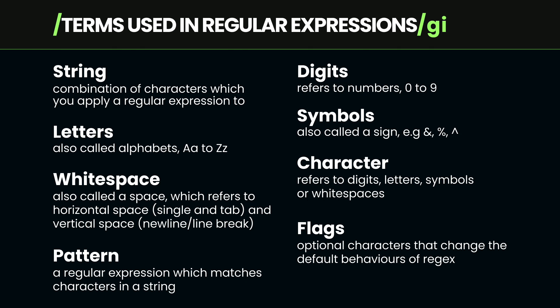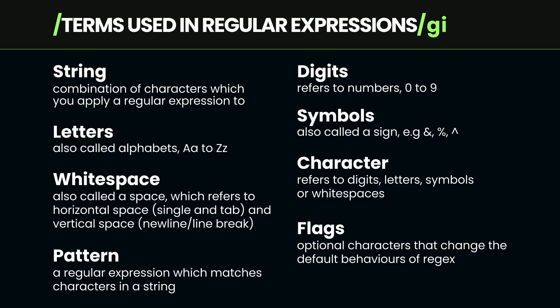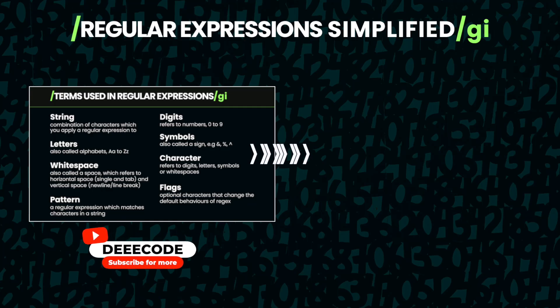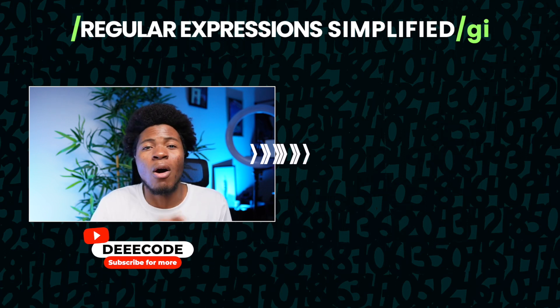Here is a summary of the terms we've looked at in this lesson. It's important to understand these terms before proceeding because they help you understand regular expressions better. We have: string — what you apply a regular expression to; digits — your numbers; letters — your alphabet, which can be uppercase or lowercase; symbols — which can have special meanings and functions in regular expressions; whitespace — horizontal and vertical space; character — which refers to a space, digit, letter, or symbol; pattern — which can also be called a regular expression, regex pattern, or regex construct; and flags — which change the default behavior of regular expressions. We'll use these terms throughout this course, so keep them in mind as we move on to creating our first regular expression.